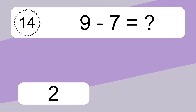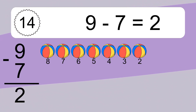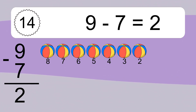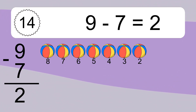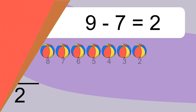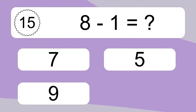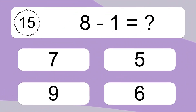Nine minus seven equals two. Let's count it: eight, seven, six, five, four, three, two. Eight minus one equals what?